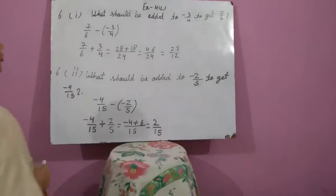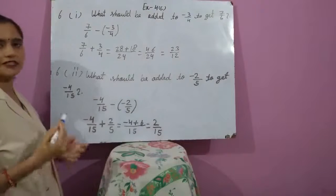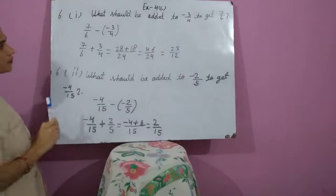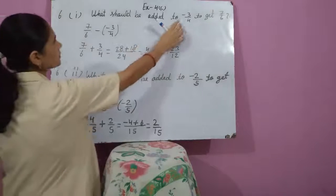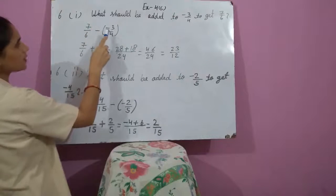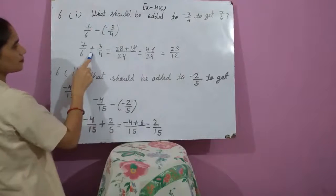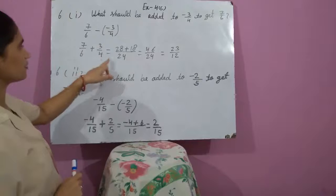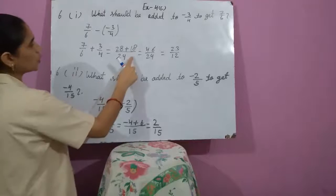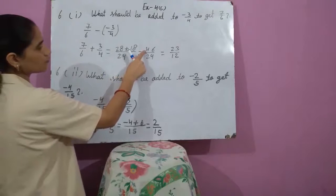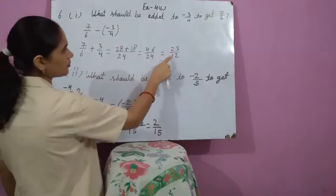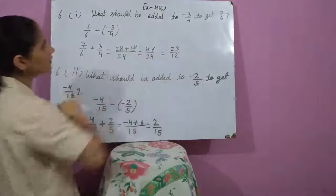Question number 6, first part: What should be added to minus 3 upon 4 to get 7 upon 6? We subtract minus 3 upon 4 from 7 upon 6. So: 7 upon 6 minus (minus 3 upon 4); minus minus becomes plus. The LCM of 6 and 4 is 24. After the calculation we get 28 plus 18. On adding both numbers we get 46 upon 24; both are divisible by 2, giving 23 upon 12. This is the required rational number.